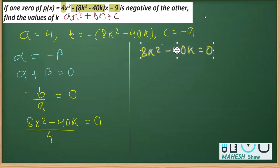Now we factorize to get the value of k. Taking 8k as common, we get 8k(k - 5) = 0. Now we can compare these two factors with 0.